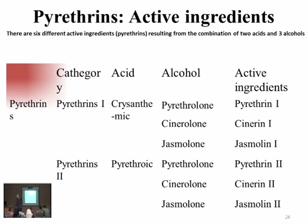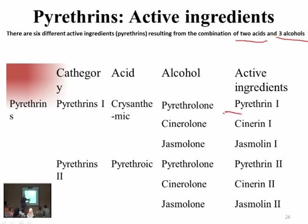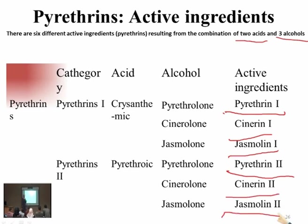From pyrethrin, six different active ingredients have been identified. Through combinations between acids and alcohols, we get: pyrethrin I, pyrethrin II, cinerin I, cinerin II, jasmolin I, and jasmolin II. These combinations of acids and alcohols with pyrethrin I and pyrethrin II give new compounds. Pre-harvest interval is two days depending on temperature and light hours.